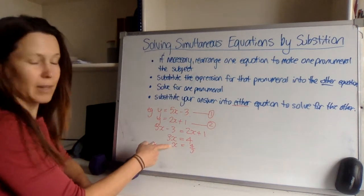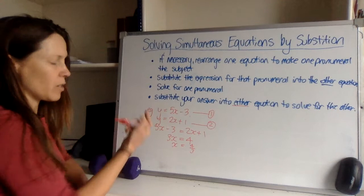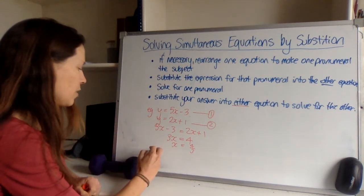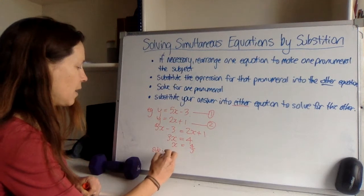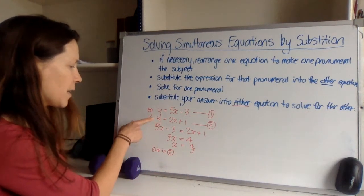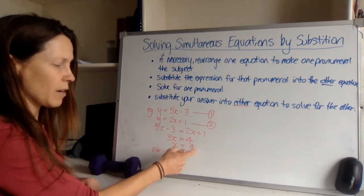Now I can sub that value of x into either of these equations to figure out what y will be. I think I'll sub it into 2, but you can sub it into whichever one you like. I write what I'm doing as well, sub into 2. So now I just write out the second equation, but don't write x, write 4 thirds.